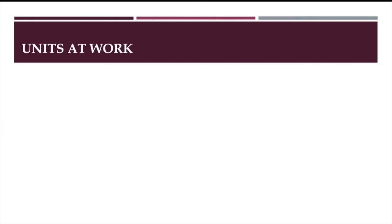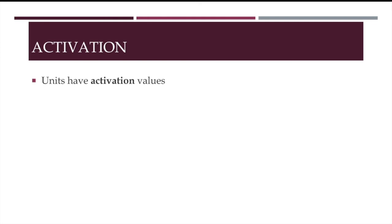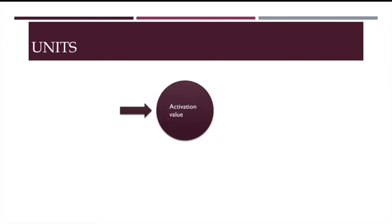Let's take a look at how these units operate. Units have activation values. This activation value is a number usually between 0 and 1. A unit, unless it is in the input layer, will typically receive its input from other units in the previous layer.